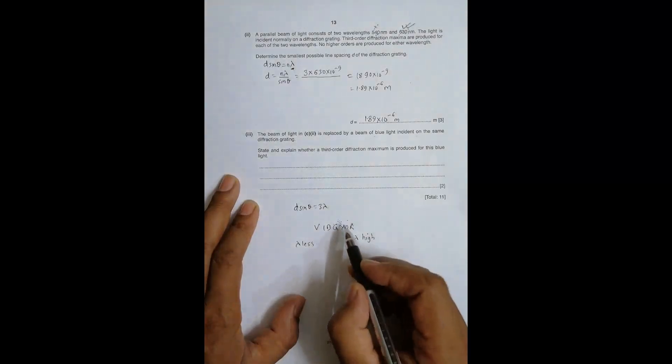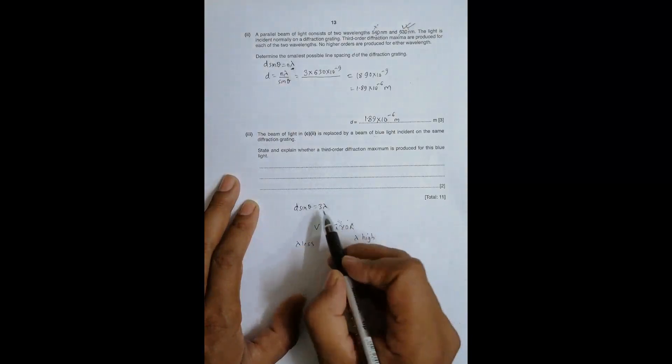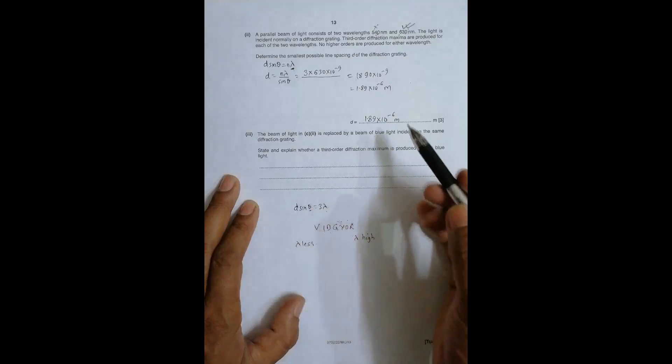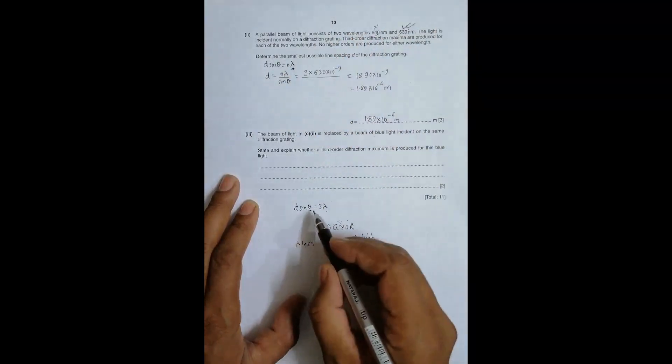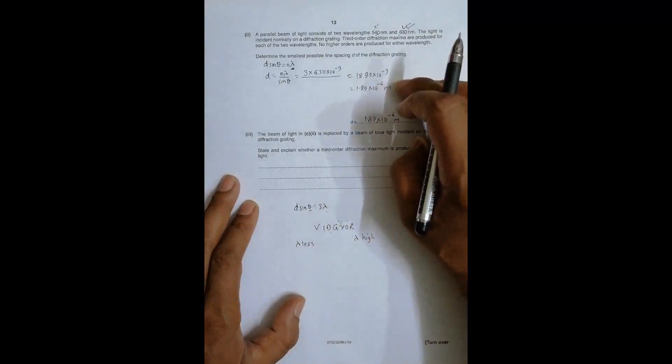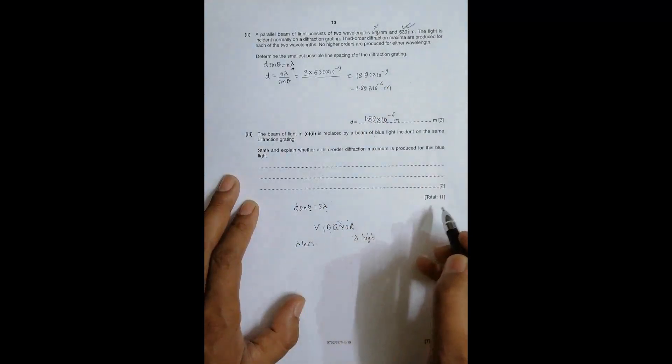If we use blue, lambda is less. So if we use blue, lambda is less, so that means theta will be less. Here theta will be less than in the previous case. That's why third order is easily formed. Theta being less means that third order will be less than that of the 630 nm case, so third order is formed. Maybe fourth is formed, who knows, but third order is definitely possible.